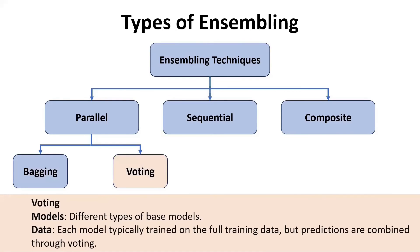Next, we move on to voting. In voting, we use different types of models — for example, logistic regression, k-nearest neighbors, naive Bayes, or decision trees. Each model is trained on the full training data, but the predictions are combined through voting. For a classification problem, you combine decisions from different models and make a final decision based on voting. For regression problems, it will simply be an average of the predictions.